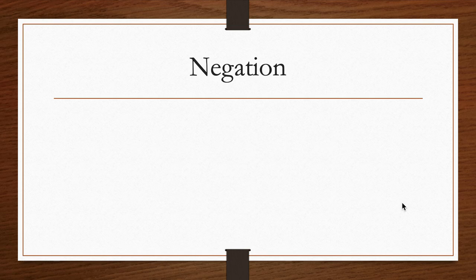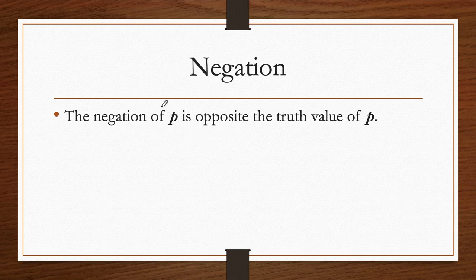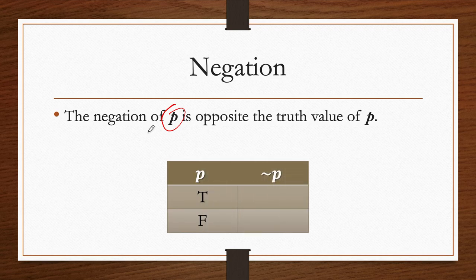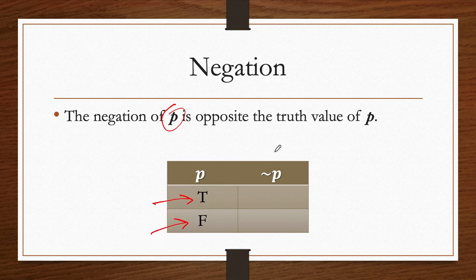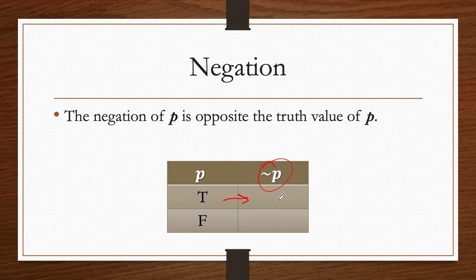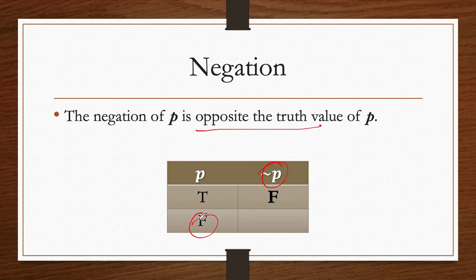The negation of P is the opposite truth value of P. P can only have two values — it's either going to be true or false. If P is true, then not P is going to be false. And if P is false, not P — which is the opposite truth value — is going to be true. So the negation will flip the truth value of one proposition.